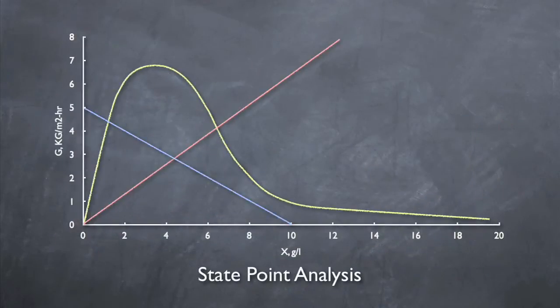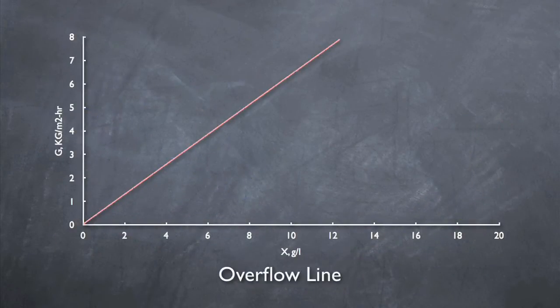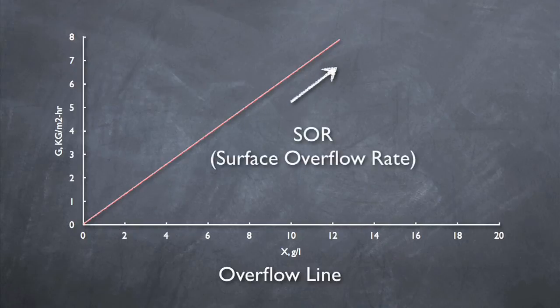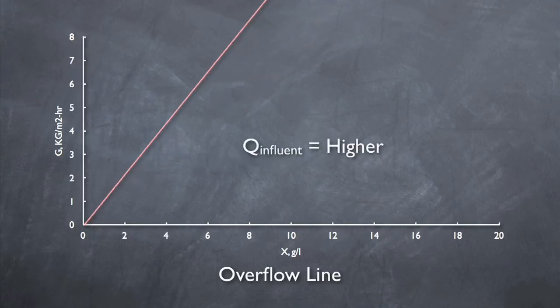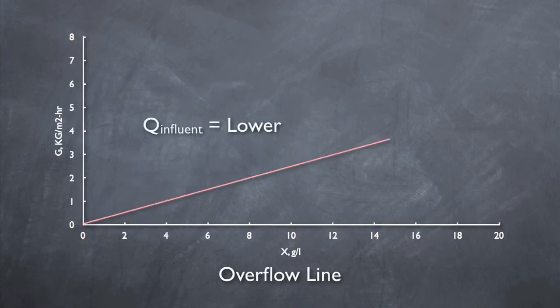The second component of the state point diagram is the overflow line. This line represents the flow through the clarifier. As the mixed liquor concentration increases, the flux increases also. The slope of this line represents the surface overflow rate, or SOR, which can be determined by dividing the influent flow by the clarifier surface area. It is important to remember that this line can be adjusted by changing the influent flow rate. A higher influent flow rate results in a steeper slope up. A lower influent flow rate results in a flatter slope.